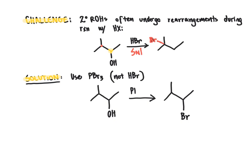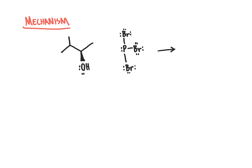Using PBr3 replaces the carbon–hydroxyl bond with a carbon–bromine bond. In the mechanism, the phosphorus atom is very positively polarized due to its three electronegative bromine atoms, making it very electrophilic and eager to accept electrons. In the first step, the oxygen atom of the alcohol acts as the nucleophile, using its lone pair to attack and form a new bond to that electrophilic phosphorus atom.